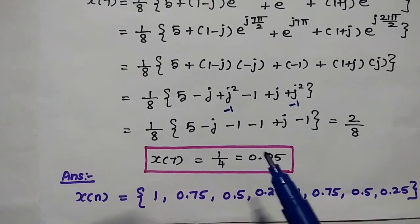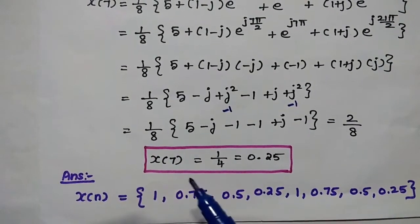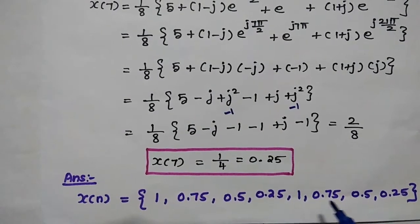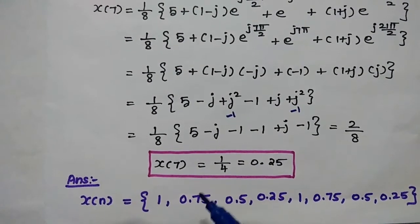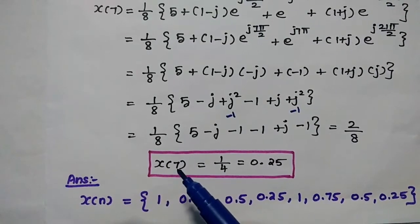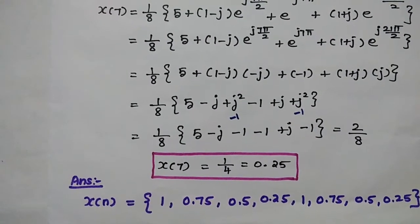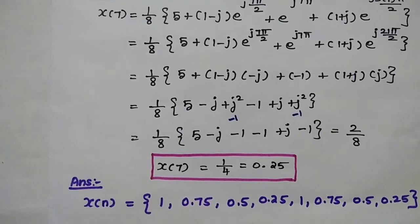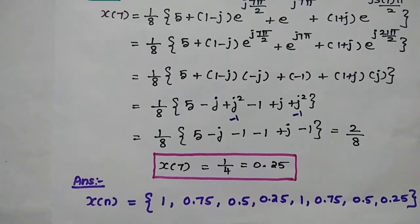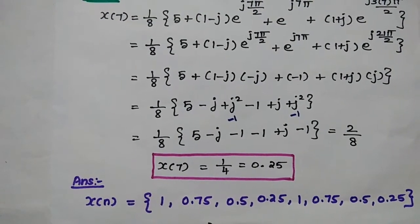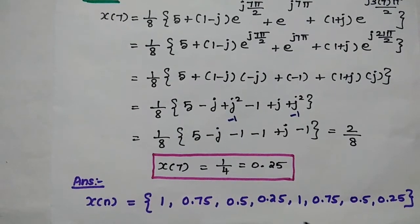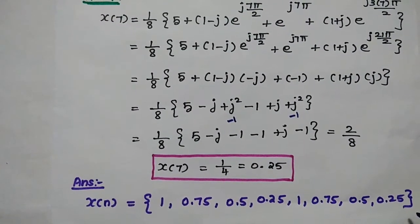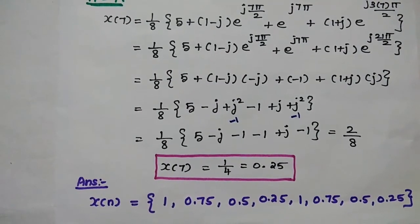We have obtained all values: x(0)=1, x(1)=0.75, x(2)=0.5, x(3)=0.25, x(4)=1, x(5)=0.75, x(6)=0.5, x(7)=0.25. Therefore the IDFT of the given sequence is x(n) = {1, 0.75, 0.5, 0.25, 1, 0.75, 0.5, 0.25}.